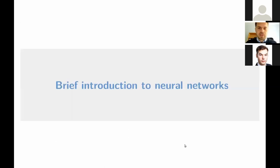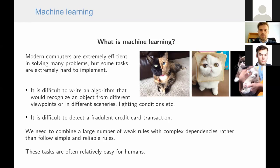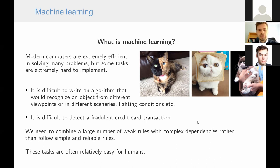I'd like to start with a brief introduction to neural networks. Modern computers are very efficient in solving many problems, but some tasks are very hard to implement algorithmically. For example, it is very difficult to write a step-by-step algorithm that would recognize an object from different viewpoints, lighting conditions, or scenarios — such as detecting a cat in a photo. Similarly, it is difficult to detect fraudulent credit card transactions. These problems require combining a very large number of weak rules with complex dependencies.